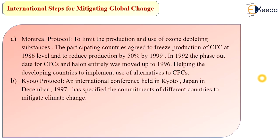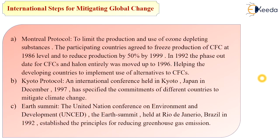The next international step is the Kyoto Protocol. An international conference held in Kyoto, Japan in December 1997 specified the commitment of different countries to mitigate climate change. The Earth Summit — the United Nations Conference on Environment and Development — was held at Rio de Janeiro, Brazil in 1992 and established principles for reducing greenhouse gas emissions.